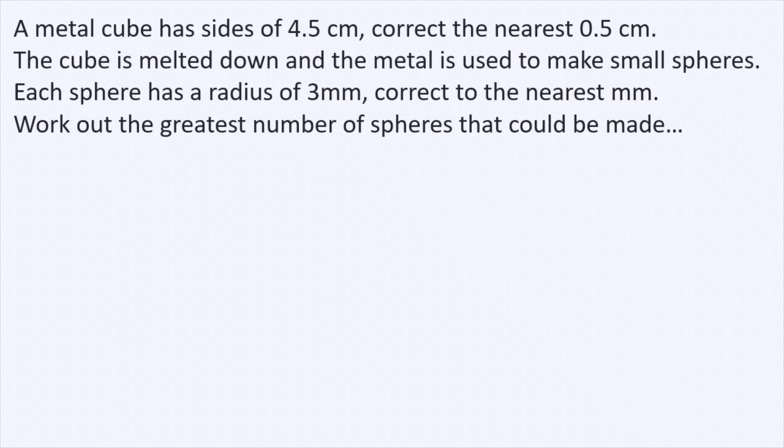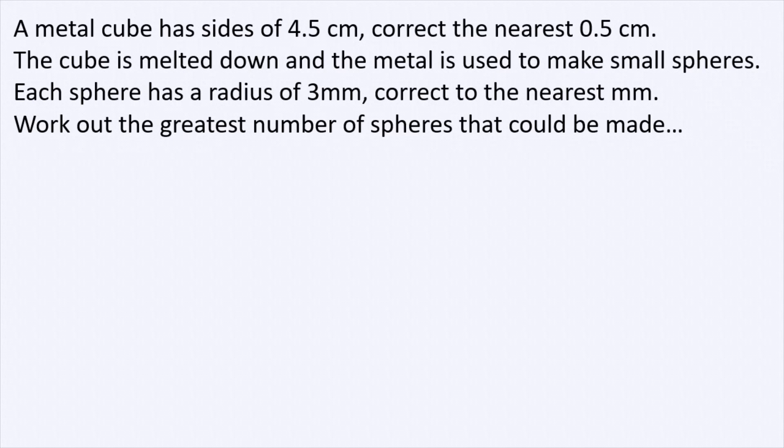Now let's look at the wording of the question. A metal cube has sides of 4.5 centimeters correct to the nearest 0.5 centimeter. The cube is melted down and the metal is used to make small spheres. Each sphere has a radius of 3 millimeters, correct to the nearest millimeter. Work out the greatest number of spheres that could be made.